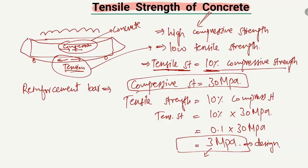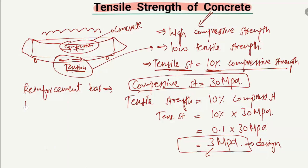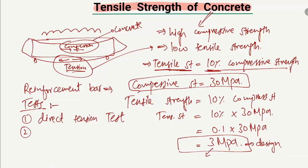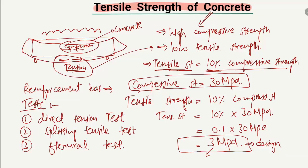There are some tests used to determine the tensile strength of concrete. The first is the direct tension test on concrete cylinders or cubes. The second is the splitting tensile strength test. The third is the flexural test. These three tests are used to determine the tensile strength of concrete, but usually it is taken as 10% of the compressive strength.